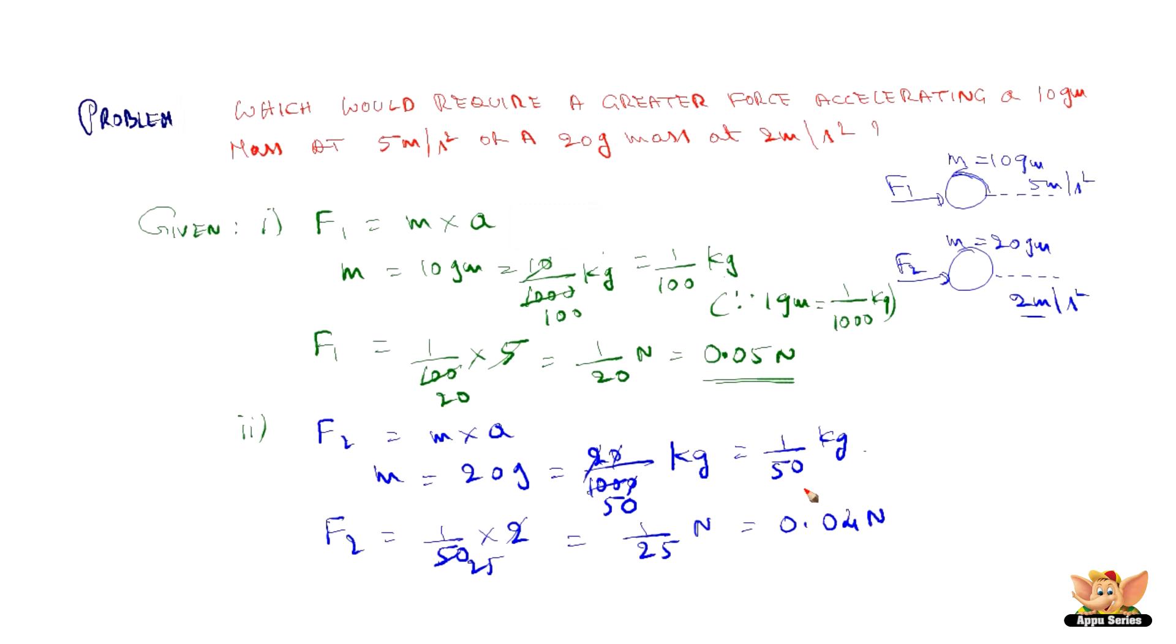From F1 0.05, F2 0.04, so we conclude that F1 is greater than F2. So this mass of 10 grams requires higher push. Go to the next problem.